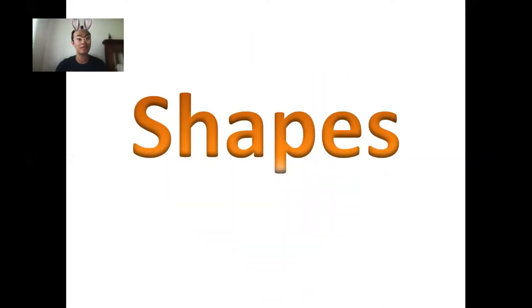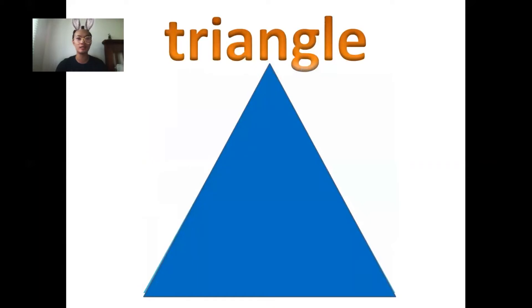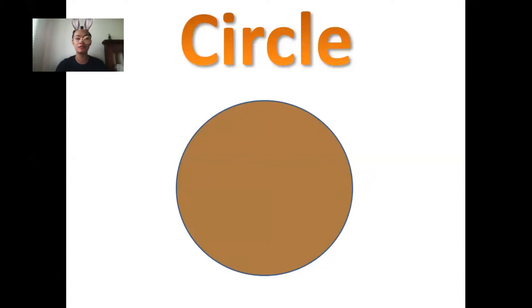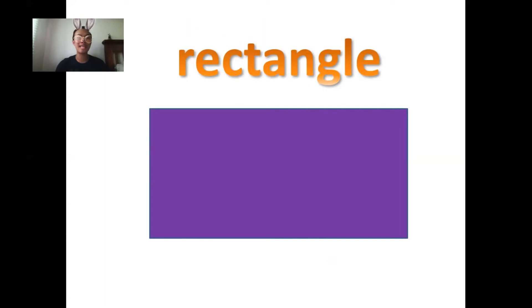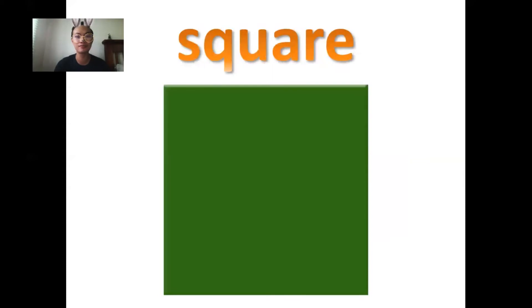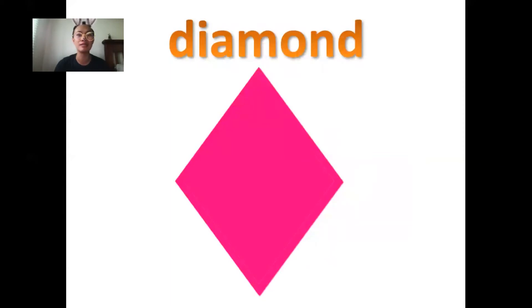Let's tell the colors of each shape. Follow after me! Blue triangle. Blue triangle. Brown circle. Brown circle. Purple rectangle. Purple rectangle. Green square. Green square. Pink diamond. Pink diamond.